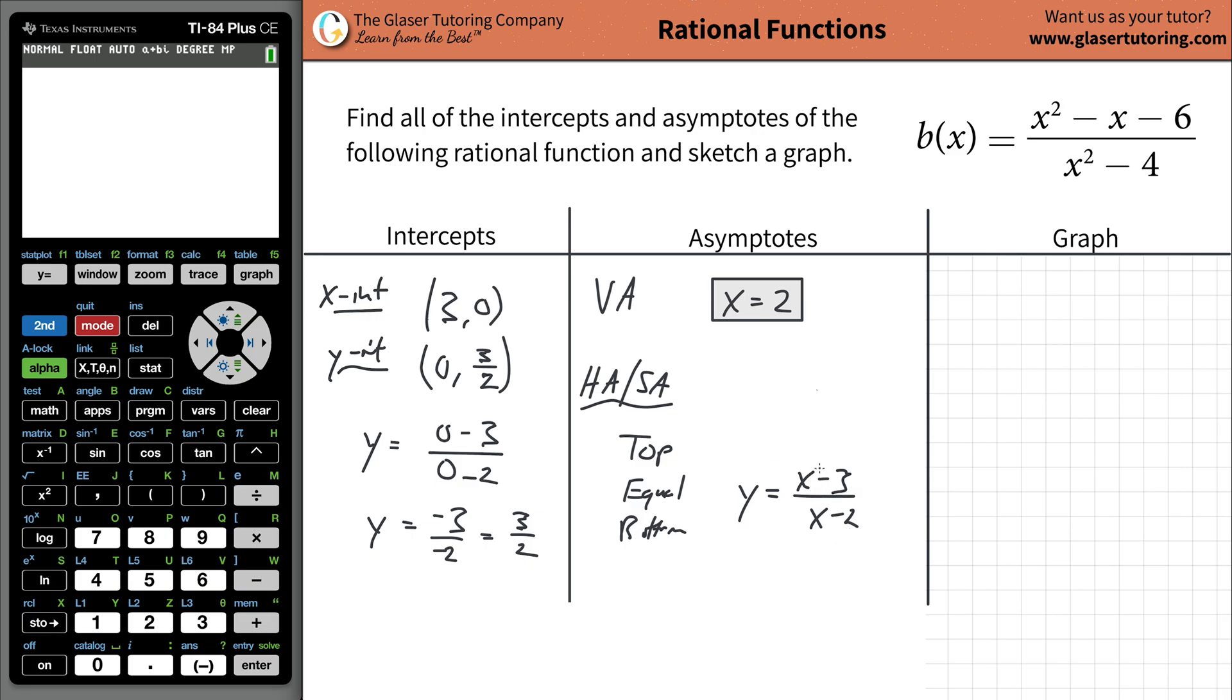what do we mean we have top, equal, and bottom? The highest power of x in the numerator is a 1. The highest power of x in the denominator is a 1. That's considered an equally heavy function. If this was squared now, and that's to the 1, that's a top-heavy, and vice versa. If that's squared, and that's to the 1, that's a bottom-heavy.